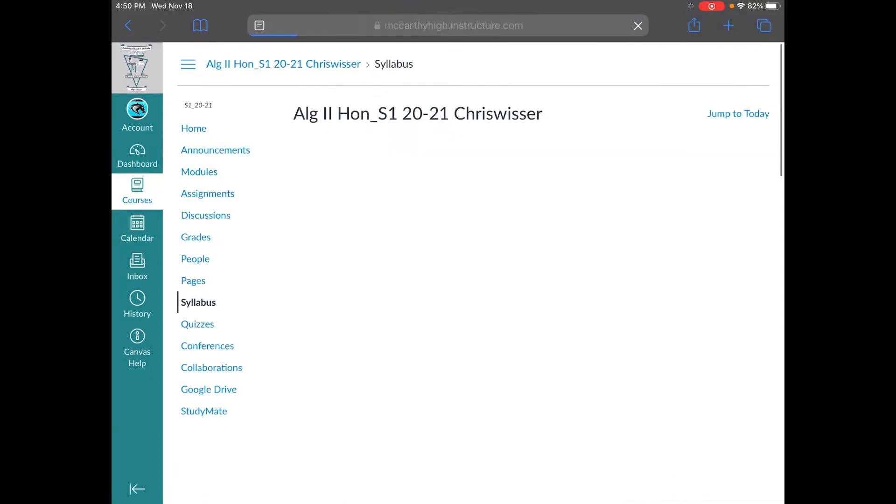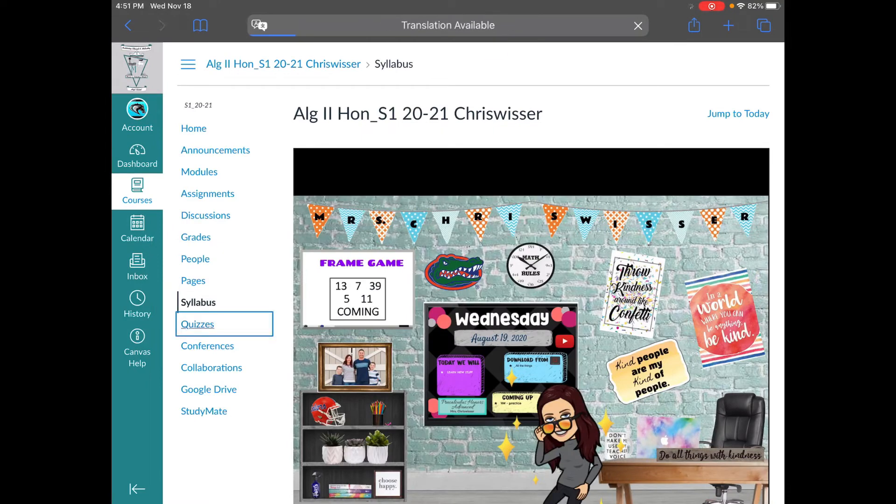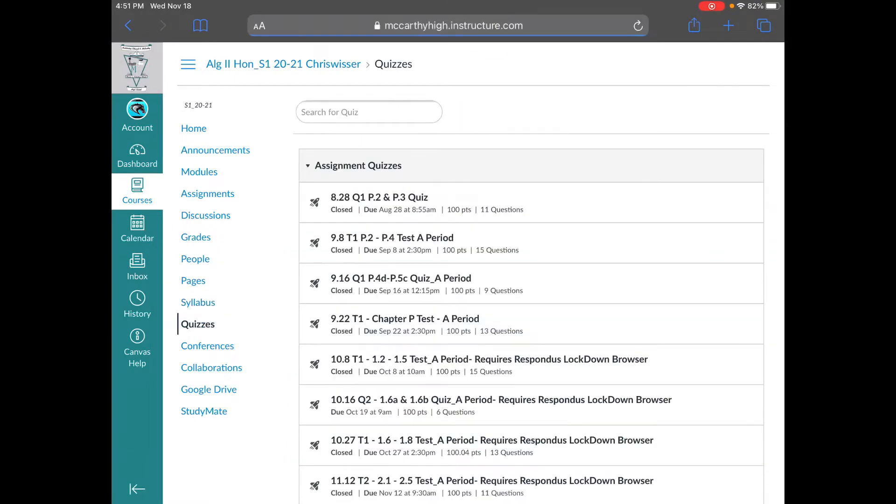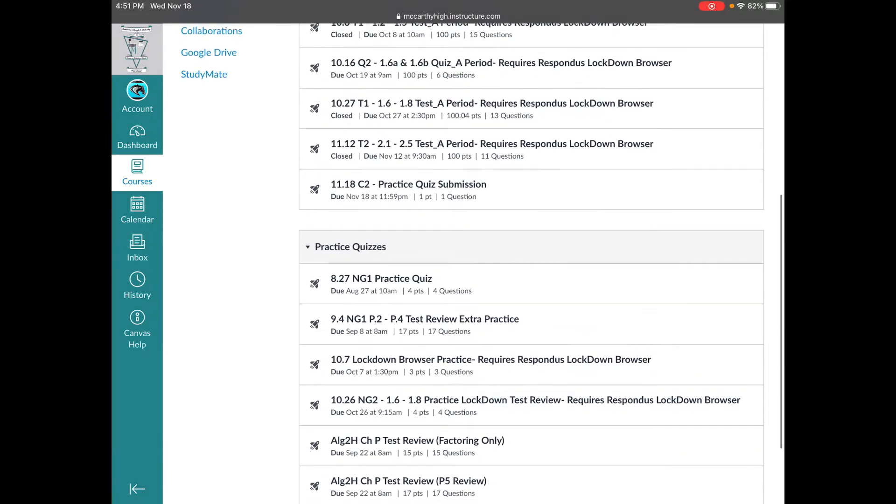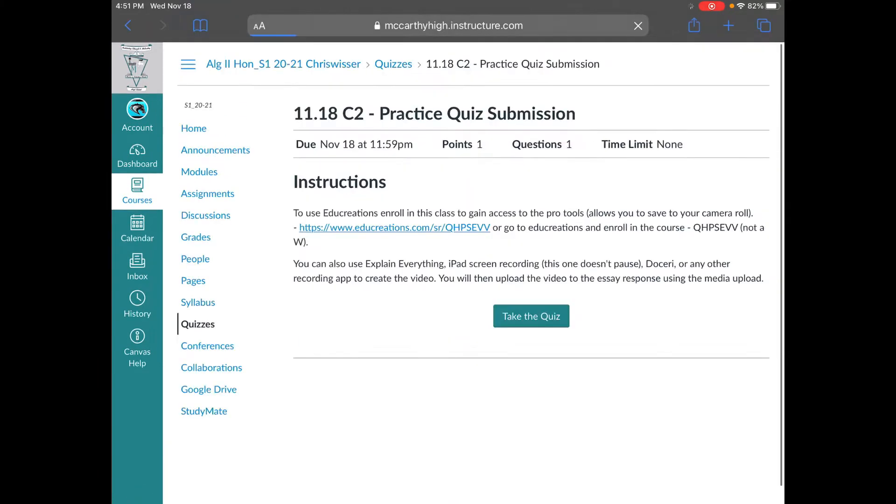If you click into the Algebra 2 course, I'm going to click into the practice quiz, but you would click into the actual quiz. So the practice quiz says here 1118, but when you're ready, you'll click onto the actual quiz.